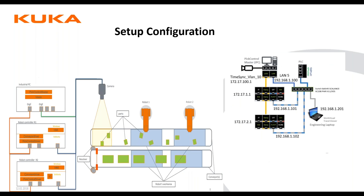This shows the overall setup configuration of what a cell would look like. To the left you have the IPC, which is connected to the robots, and these are all daisy chained together on the same subnet so that everything communicates efficiently and effectively. On the other subnet, your switch, PLC, and service laptop all get routed back to the IPC. The camera is also connected to our FASH measurement inputs. You can have up to three FASH measurement inputs — on the KRC5 micro there are three, on the standard KRC5 there are up to four, but as a base for PIC control, there are only up to three.